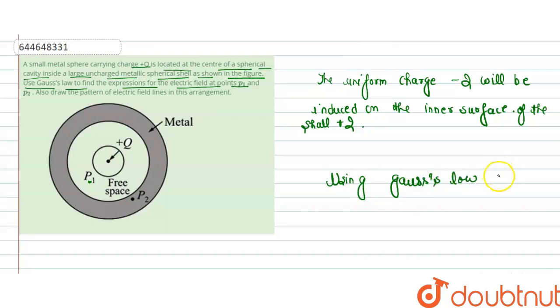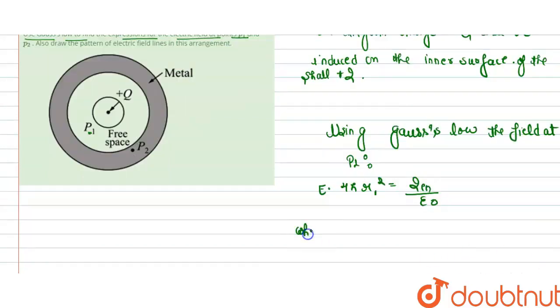The field at P1, so that is E into 4 pi R1 square is equal to the Q enclosed divided by epsilon naught, where Q enclosed is equal to the positive Q charge inside Gaussian surface of radius r1.